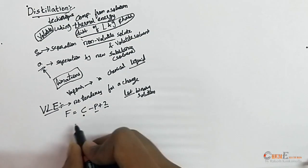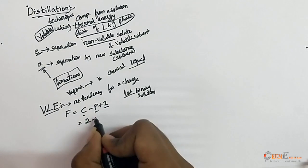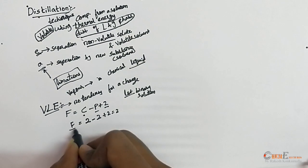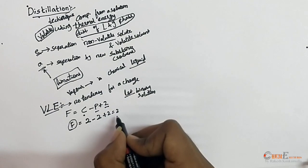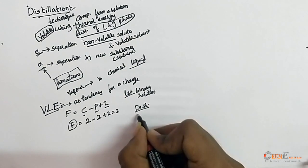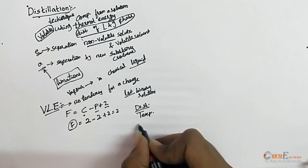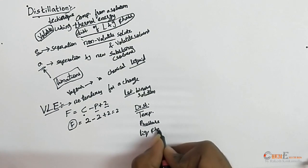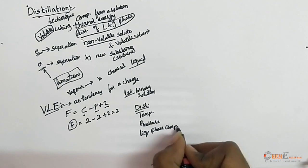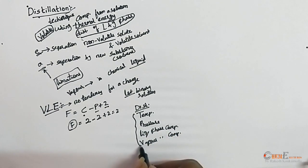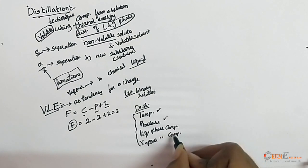For a binary solution, the number of components is 2 and the number of phases — liquid and gaseous — is 2, giving F equals 2 degrees of freedom. This means we need 2 parameters to find the remaining variables. In distillation, the parameters used are temperature, pressure, liquid phase composition, and vapor phase composition.